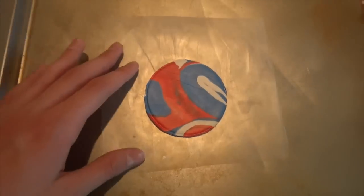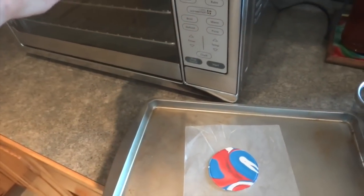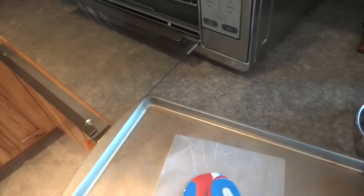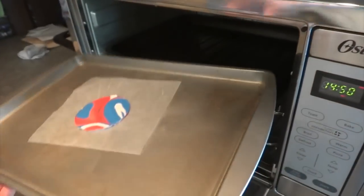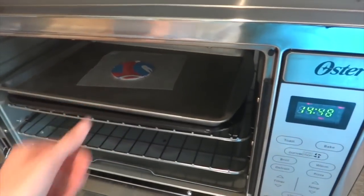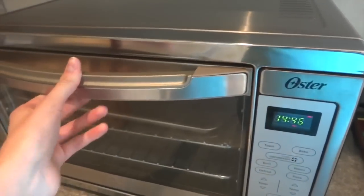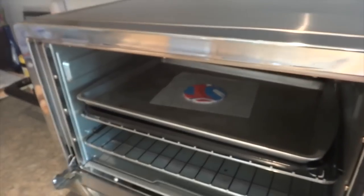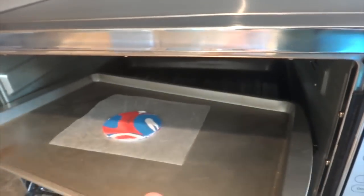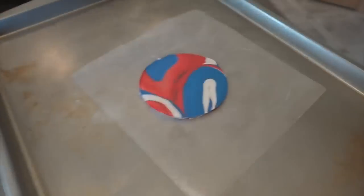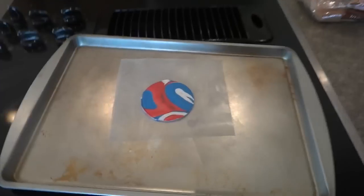Now all you need to do is bake it according to the directions that are on the back of your clay package. Once you take it out of the oven, make sure that you don't touch it and you let it completely cool off before you touch it and remove it, because once you take it out of the oven it's still soft and it needs time to harden.